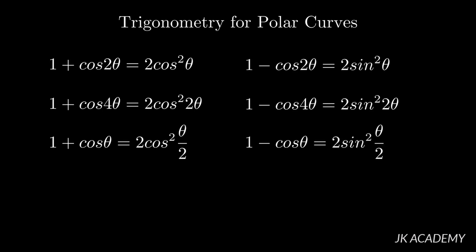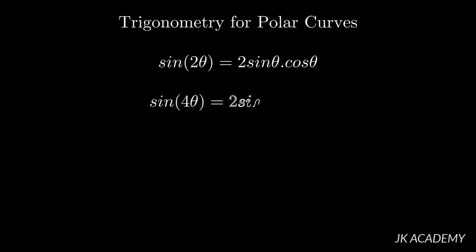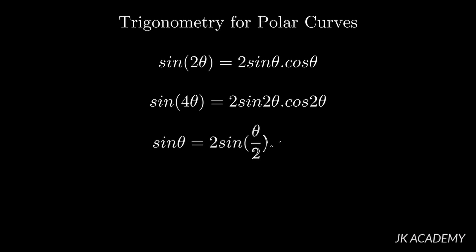Now we look at the half-angle formula in terms of sine. Sine 2 theta is equal to 2 sine theta cos theta — whenever it involves sine, the RHS will have both sine and cosine. So sine 4 theta equals 2 sine 2 theta cos 2 theta, and sine theta equals 2 sine (theta by 2) cos (theta by 2).